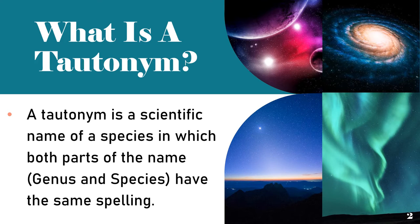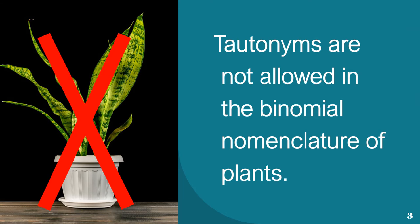A tautonym is a scientific name of a species in which both parts of the name, genus and species, have the same spelling. Tautonyms are not allowed in the binomial nomenclature of plants.